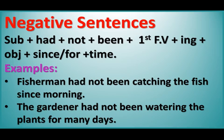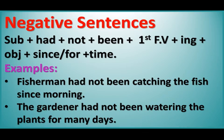For negative sentences, the formation is: subject + had not been + first form of verb with -ing + object + since/for + time. Examples: 'The fisherman had not been catching the fish since morning.' 'The gardener had not been watering the plants for many days.'